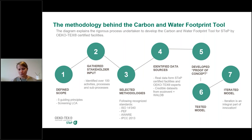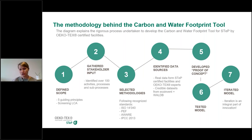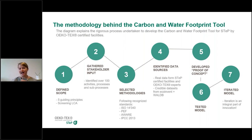Step five was developing a proof of concept: we developed the tool, fed it with all the data, tested it, and brainstormed together on how things should work — initially a simple Excel tool. Step six was to test the model: ECHOTEX had four or five current clients with a STEP certification use this Excel tool and give feedback on how difficult or easy it was to collect data and whether the results were useful. Step seven is the iterative approach: even after launch, we will collect more data from users and improve background data in the tool so accuracy will increase over time.